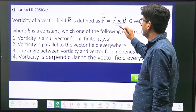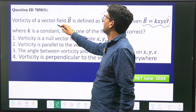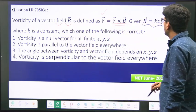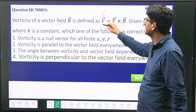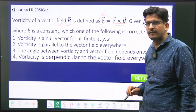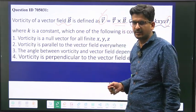So we will have to calculate this del cross B, then we can answer this question. They are calling this V, the curl of B, as vorticity, because the curl is related to the vortex.